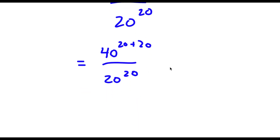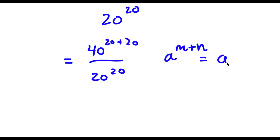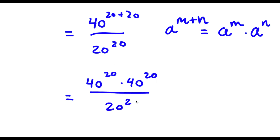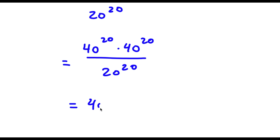Now if I have something in the form a to the power of m plus n, this equals a to the power of m times a to the power of n. So 40 to the power of 20 plus 20 can be rewritten as 40 to the power of 20 times 40 to the power of 20, and I have this over 20 to the power of 20.